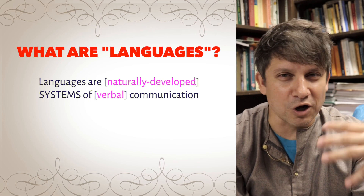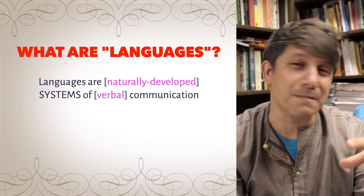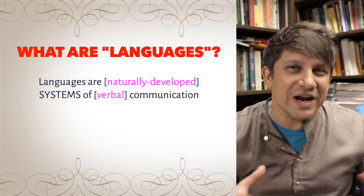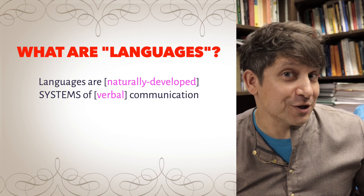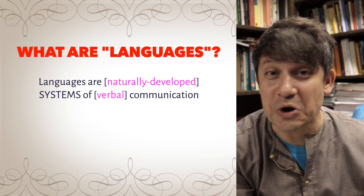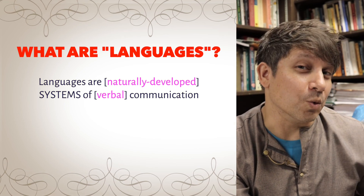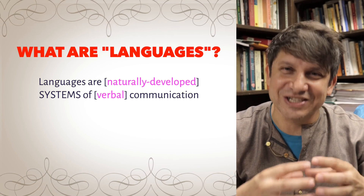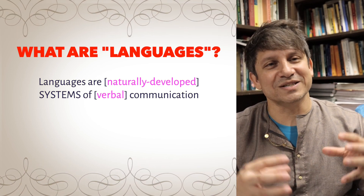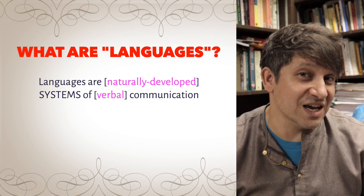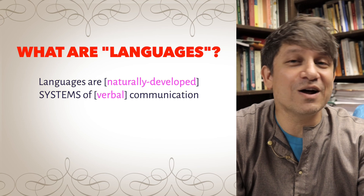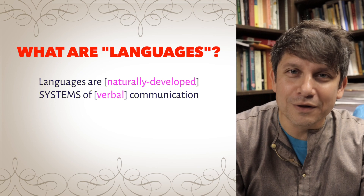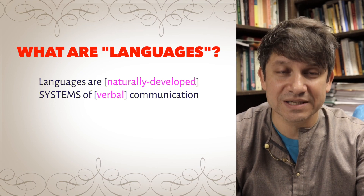We use bits and bobs called words in a systematic way — we make sentences out of them based on a distinct set of rules we already know as adults. If other people know how our code works and what our words mean, they can decipher the message we've encoded in a sentence. This constitutes a successful act of linguistic communication. Two ideas worth noting in this definition are 'verbal' and 'naturally developed.'